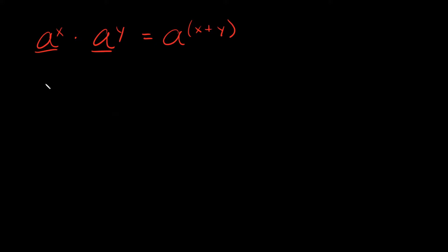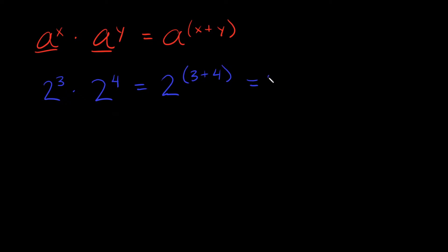Let's do a few examples. If I gave you 2 cubed times 2 to the fourth, this would equal 2 to the 3 plus 4, which reduces to 2 to the 7th. We had the same base so we kept it, and then we added the exponents — 3 plus 4 equals 7. And 2 to the 7th equals 128.